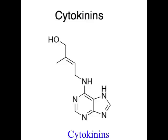The third group is cytokinins. Together with auxin, cytokinins are responsible for cell division and cell differentiation — basically making different types of cells. If a cell has more cytokinin than auxin, stems and leaves grow. If a cell has more auxin than cytokinin, roots grow. So you get different types of plant cells depending on how much of each hormone is in the cell.